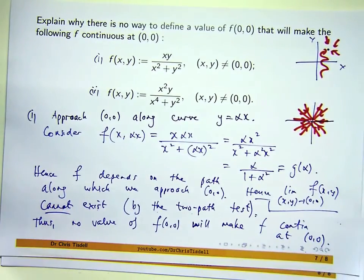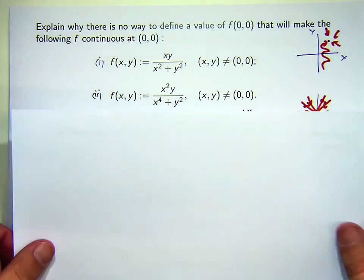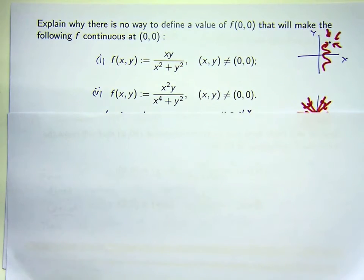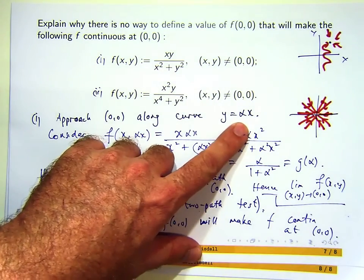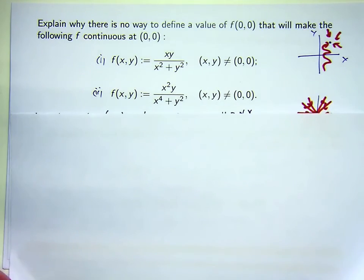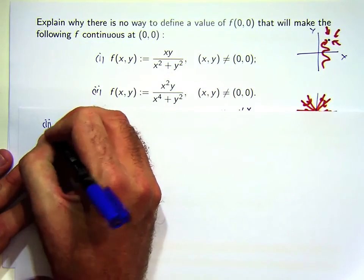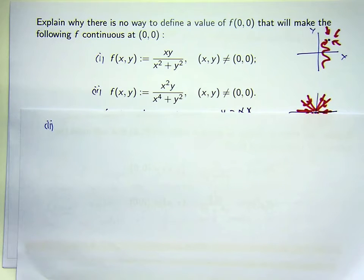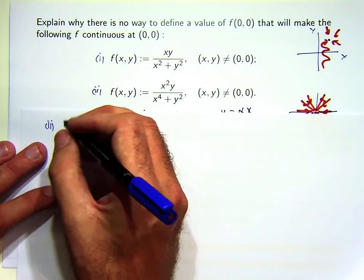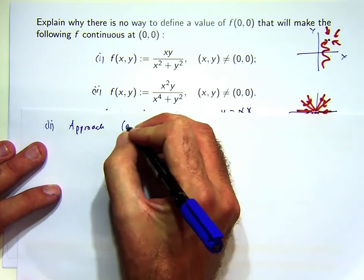Let me do part two now. In part two, you're asked to show again that there's no value you can assign to f(0,0) to make the function in part two continuous. Similar to part one, you could try straight lines, but it's actually not going to help you much — the alphas will probably cancel out, and that doesn't tell you whether the limit exists. What we're looking for is curves where the limit along two of them are not equal. So in this case, we're going to approach (0,0) along parabolas.